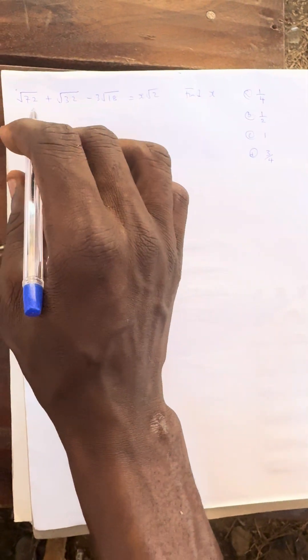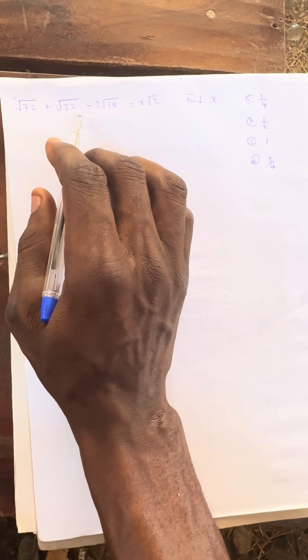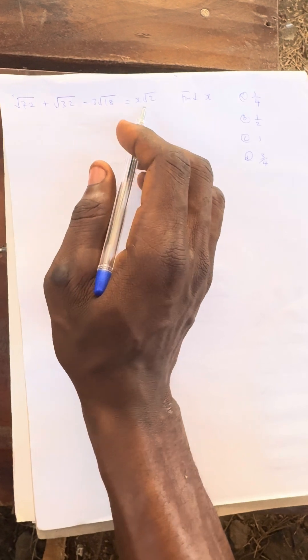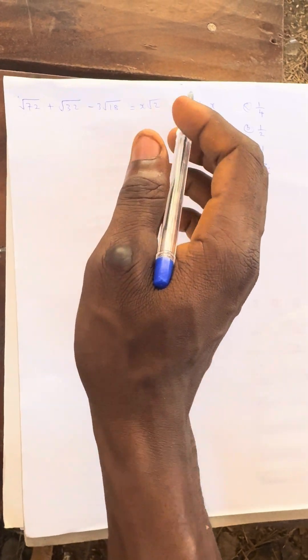Welcome to another question. The question says if you have √72 + √32 - 3√18 equals x√2, find x.